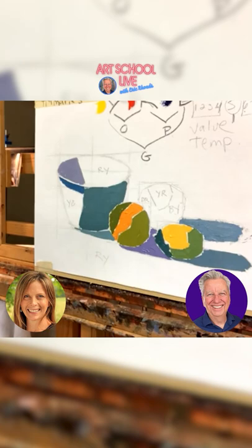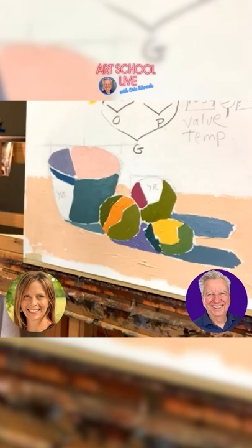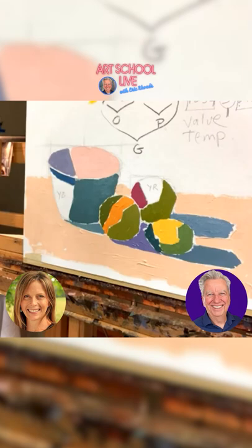Up here I've got a drawing done and my basic primaries. We're going to talk about primaries, secondaries, and tertiaries. I've got Y, R, and B — which is yellow, red, and blue.